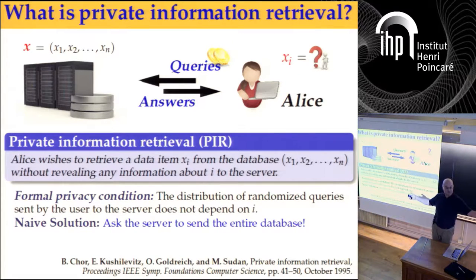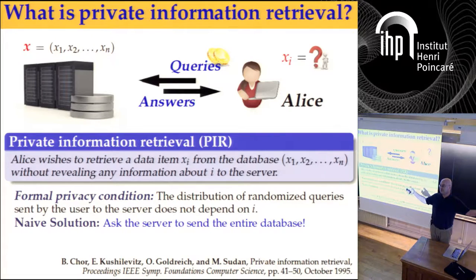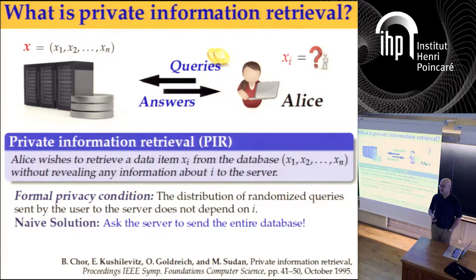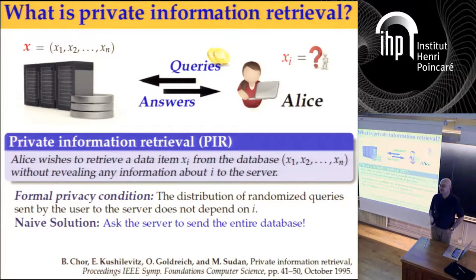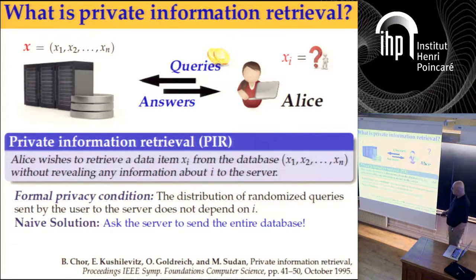You read the whole database, the server knows nothing, and you retrieve your i-th item. That's obviously not very efficient, because we assume n is very, very large. So this is the naive solution.